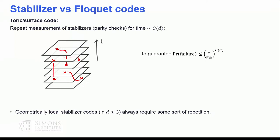If the error probability is not too high, we will successfully correct the state. Viewed from this perspective, the Toric code is actually the simplest example of a Floquet code — the trivial Floquet code — because we keep repeating measurements in time.